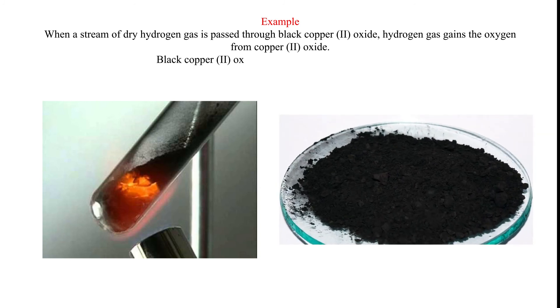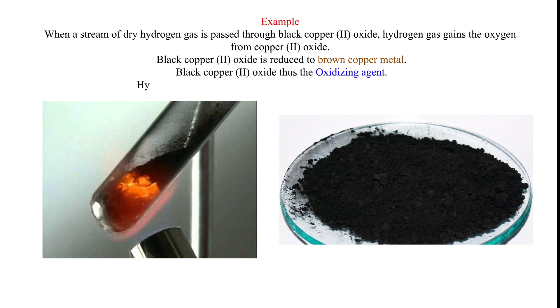Black copper (II) oxide is reduced to brown copper metal. Black copper (II) oxide is thus the oxidizing agent. Hydrogen gas is oxidized to water. Hydrogen is the reducing agent.